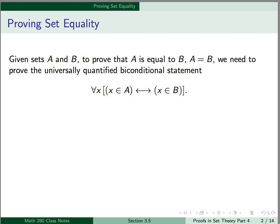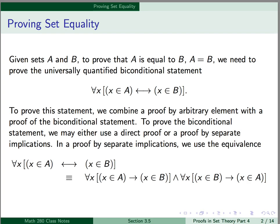Given sets A and B, to prove that A is equal to B, we need to prove the universally quantified biconditional statement: for all x, x is an element of A if and only if x is an element of B. To prove this statement, we combine a proof by arbitrary element with a proof of the biconditional statement.